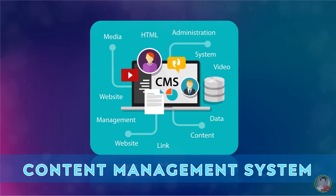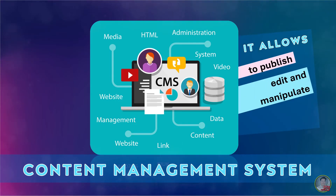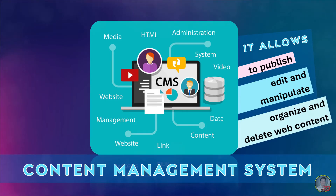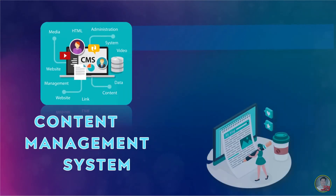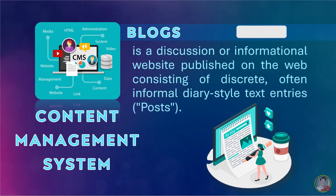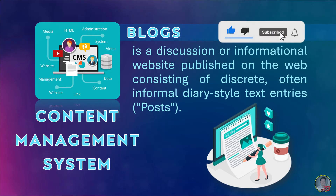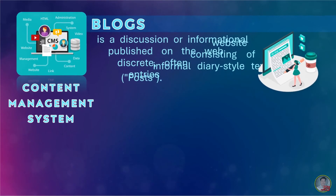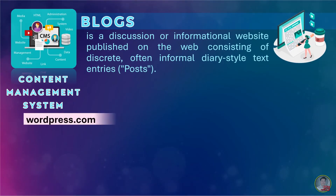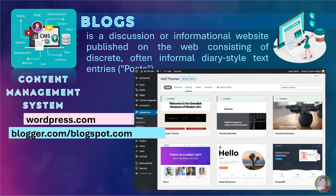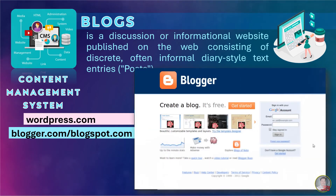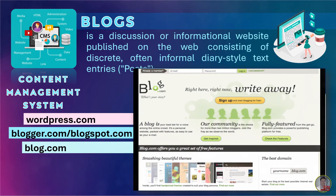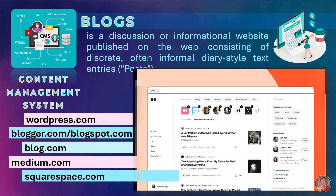Content Management System or CMS is a computer application, sometimes online or browser-based, that allows you to publish, edit, manipulate, organize, and delete web content. CMS is used in blogs, news, websites, and shopping. An example is blogs — a discussion or informational website published on the web consisting of discrete, often informal diary-style text entries or posts. Posts are typically displayed in reverse chronological order so that the most recent post appears first. Blogging sites include: WordPress.com, Blogger.com or Blogspot.com, Blog.com, Medium.com, and Squarespace.com.